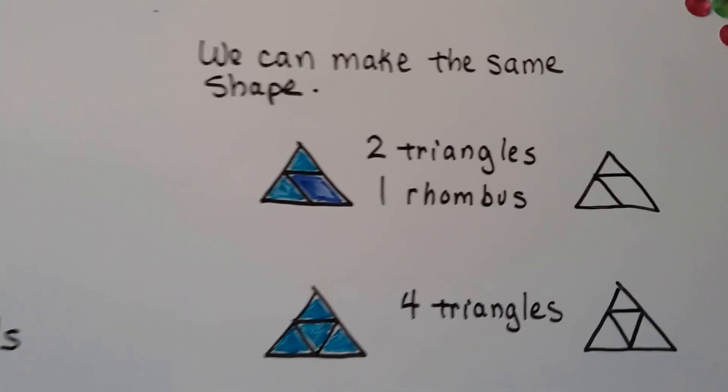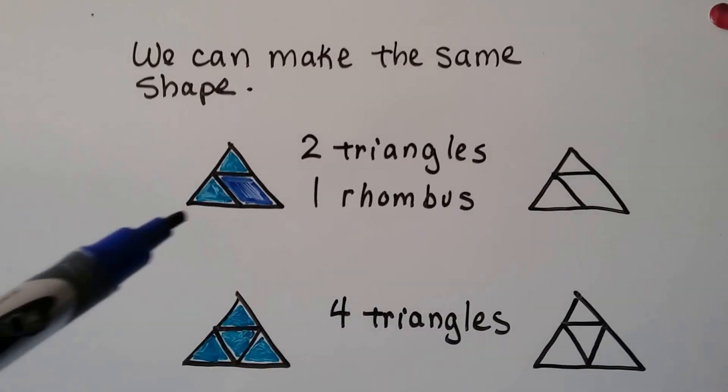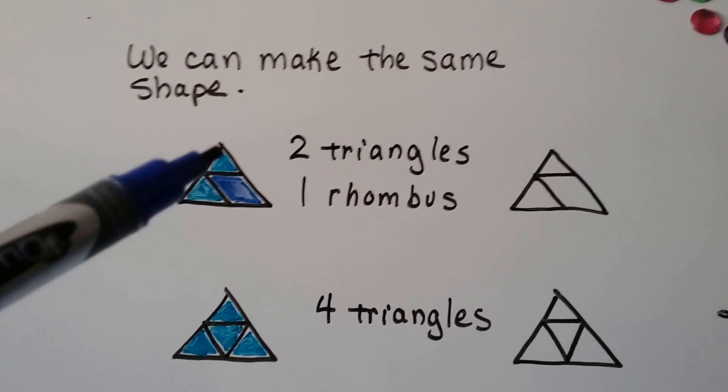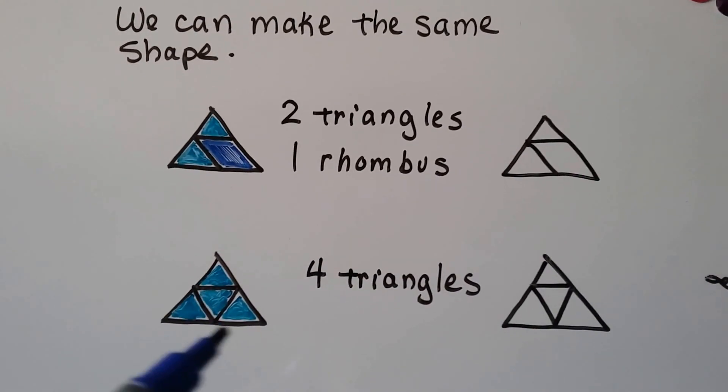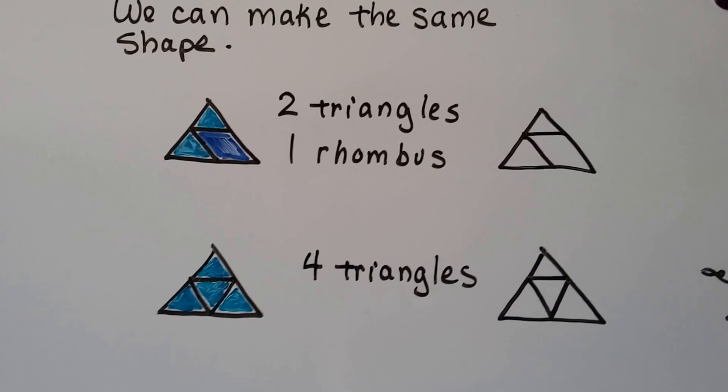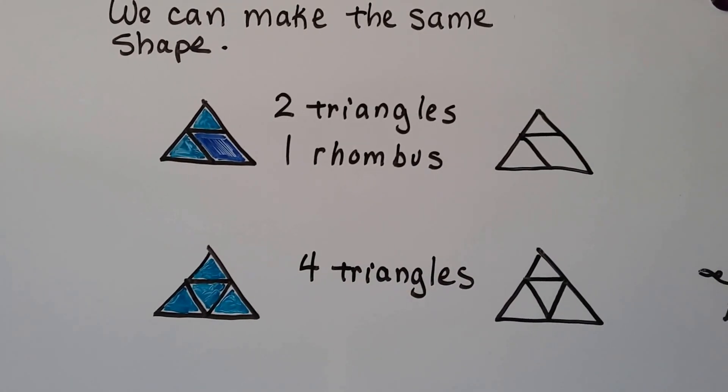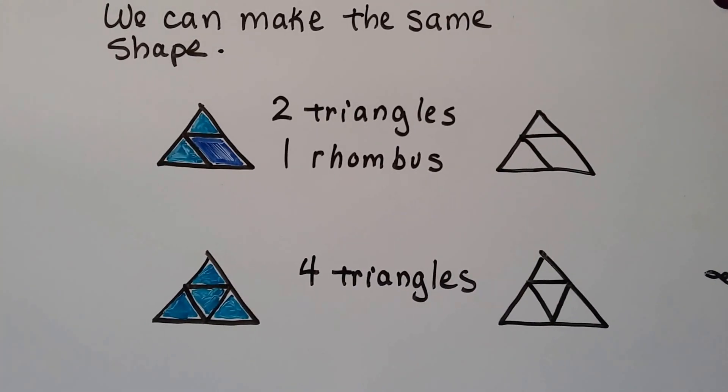Just like with the triangle. We can make the same shape. I can either make this triangle with two triangles and a rhombus, so it's like this, or I can use four triangles, so it's like that. It's the same size. I'm just using different shapes.